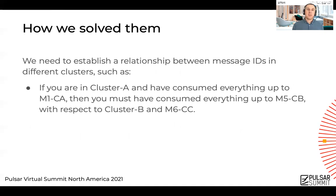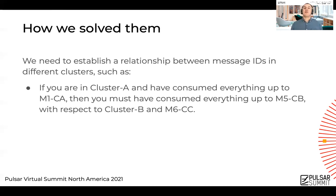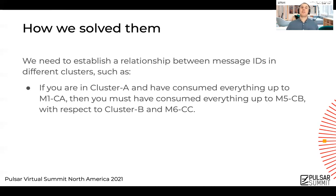The core idea of this feature is to establish a relationship between message IDs in different clusters. We need to answer one simple question: if you are a consumer in cluster A and have consumed everything up to message ID 1 in cluster A, then you must have consumed everything up to — say — message 5 in cluster B and message 6 in cluster C. By establishing this relationship, once the cursor position moves past message 1 in cluster A, we can advance the cursor in cluster B up to message 5.